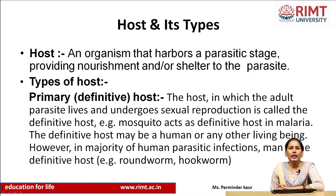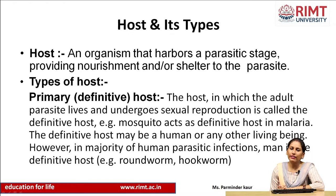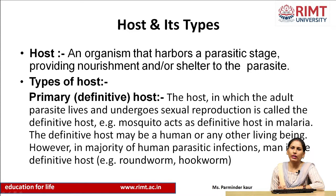Moving to the host — as we know, a parasite cannot live without the host. A host is an organism that harbors a parasitic stage, providing nourishment or shelter to the parasite. We have different types of host. The primary host, also known as the definitive host, is the host in which the adult parasite lives or undergoes sexual reproduction. The mosquito acts as a definitive host in the malaria parasite because sexual reproduction of the malaria parasite occurs in the gut of the mosquito.